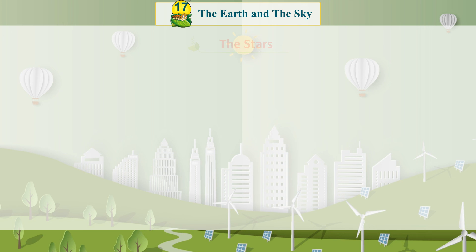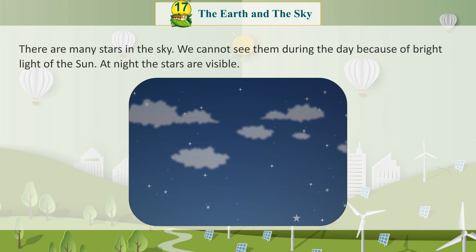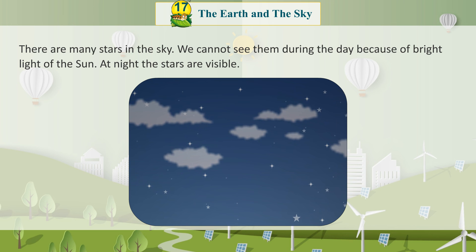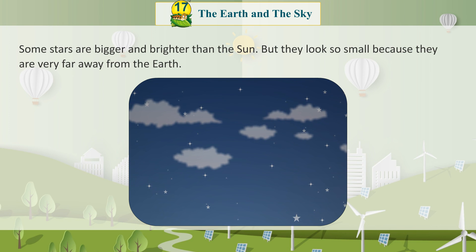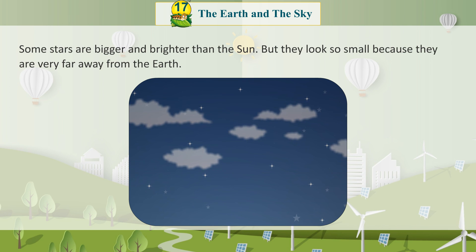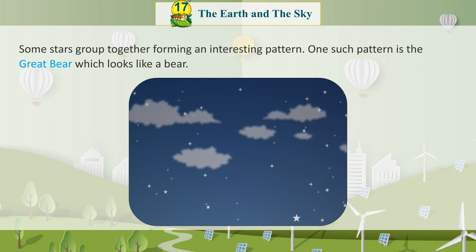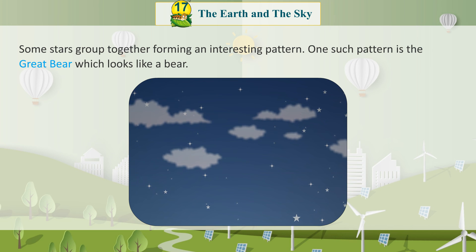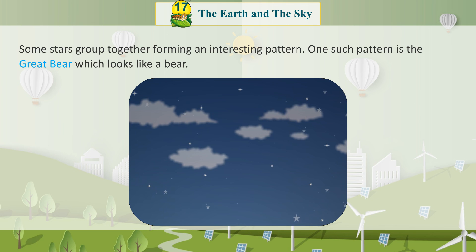The Stars: There are many stars in the sky. We cannot see them during the day because of the bright light of the sun. At night, the stars are visible. Some stars are bigger and brighter than the sun, but they look so small because they are very far away from the earth. Some stars group together, forming an interesting pattern. One such pattern is the Great Bear, which looks like a bear.